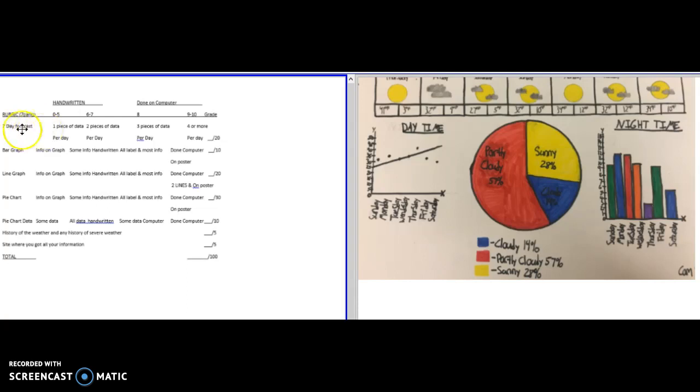The rubric is over here on the left. The seven-day forecast, as long as it's done in computer format and has all the components—the four components I'm looking for—you can get 20 points. The bar graph will be just a simple bar graph, 10 points. The line graph done on computer to get full credit with two lines would be 20 points.